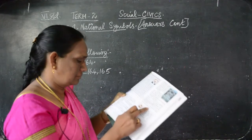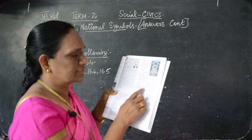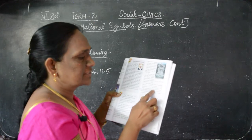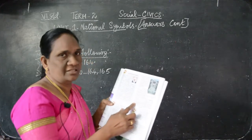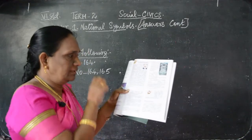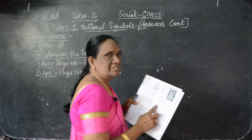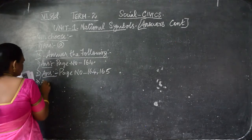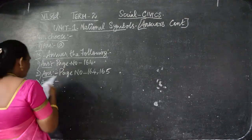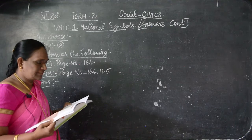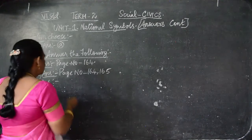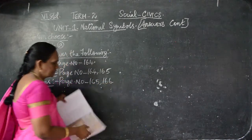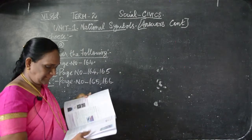For the answer, you can write from the national emblem description till 'the wheel of righteousness is placed between them' — that is enough. Third question: What are the salient features of the national anthem? It is in page numbers 165 and 166. National anthem — Janaganamana is our national anthem.